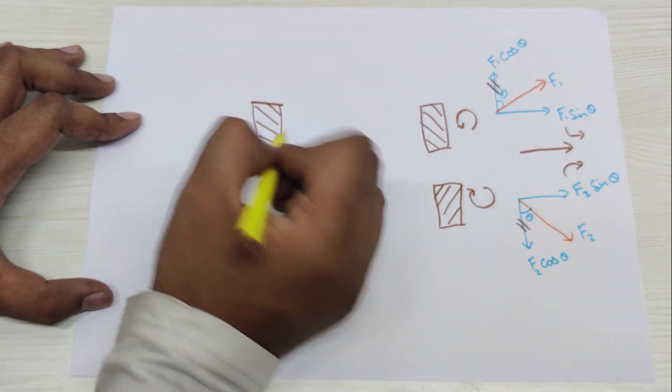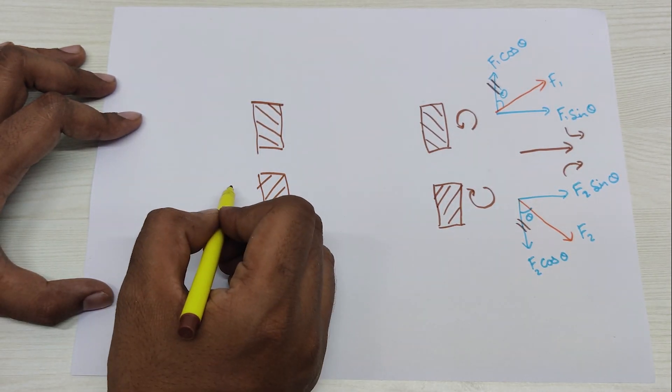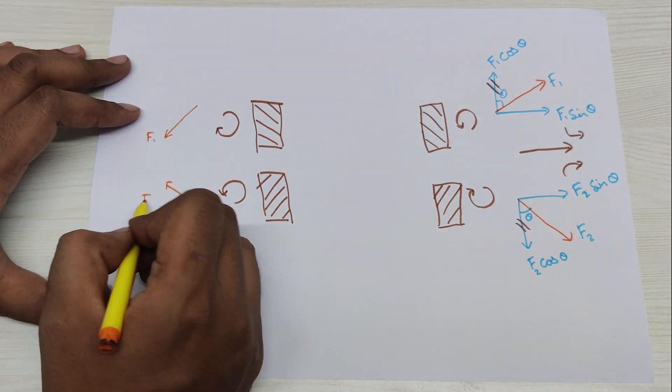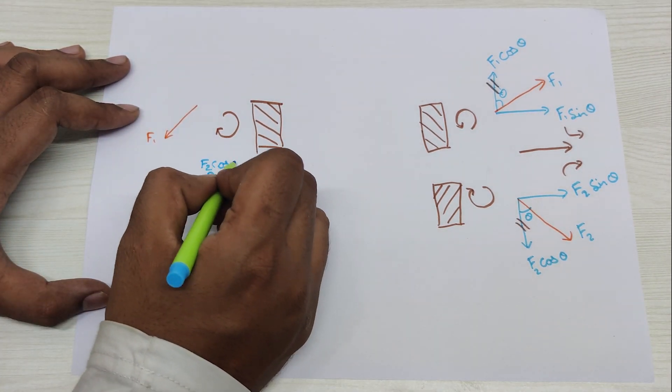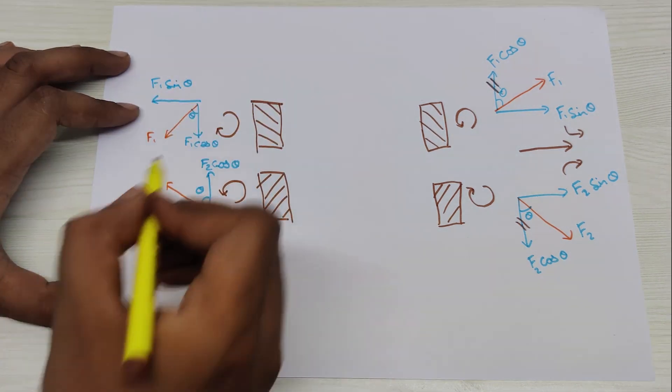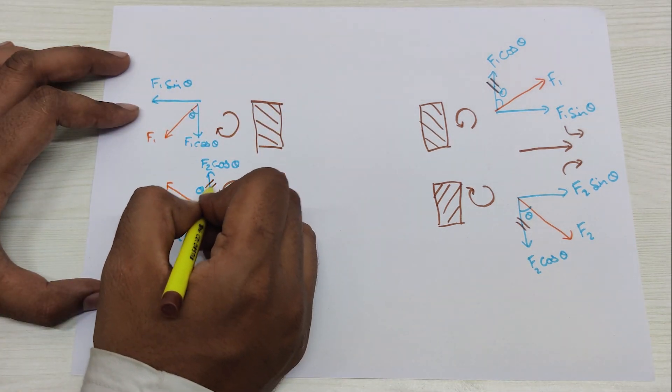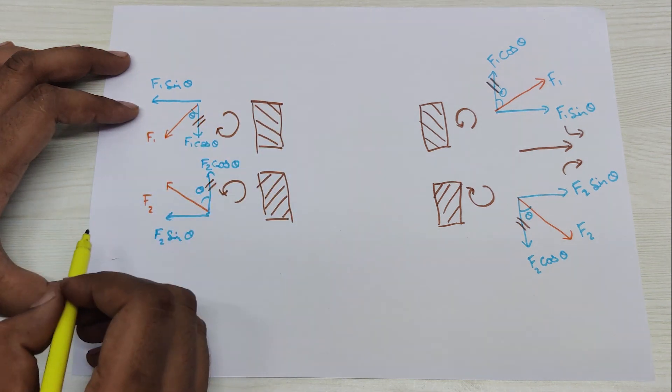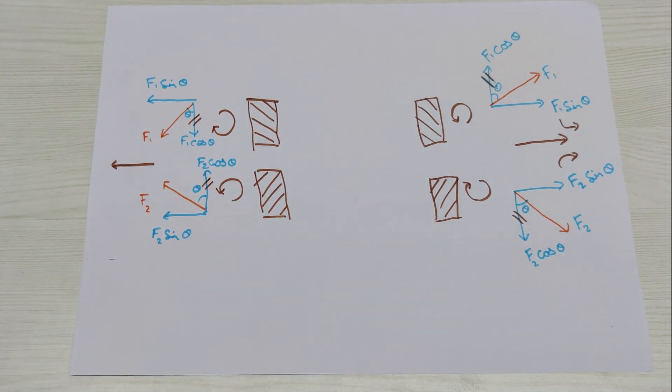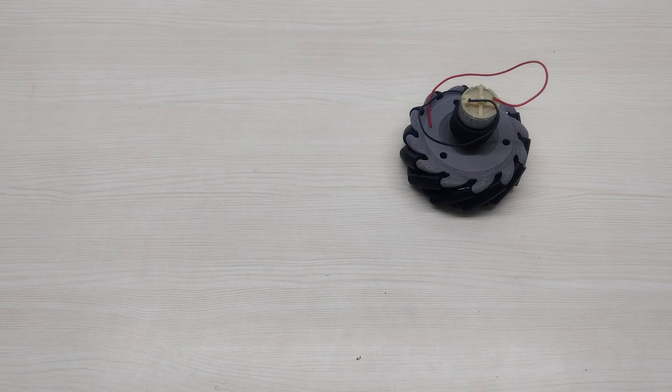Now we will reverse the wheel rotation and perform the same calculation. Again here F1 cos theta will cancel F2 cos theta and we are left with F1 sin theta and F2 sin theta and thus our wheels will move in leftward direction. And this was the basic concept of the mecanum wheel.